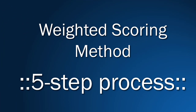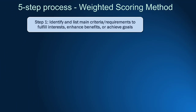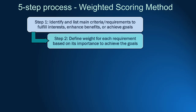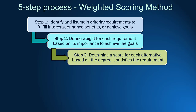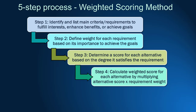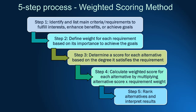The weighted scoring method can be explained in five easy steps. First, define the objective and requirements. Second, grade each requirement's importance with weights. Third, identify alternatives to achieve the objective. Fourth, give scores to each alternative and calculate the total weighted score. Finally, rank alternatives and interpret the results.